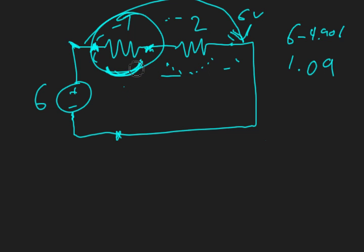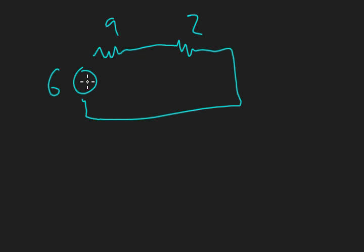Same example again. Sorry if this is getting a bit messy. I'll redraw the whole thing. So we had 6 volts, 9 and 2 ohm resistors, and the voltage source.